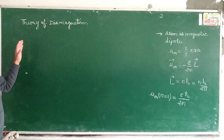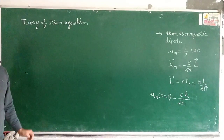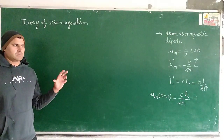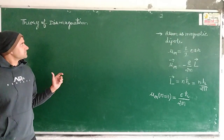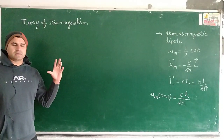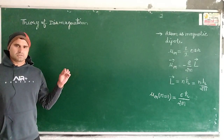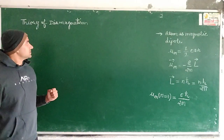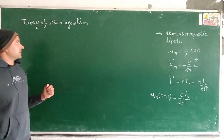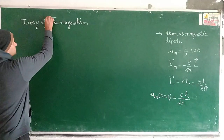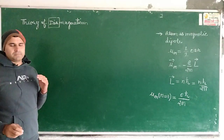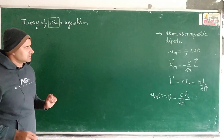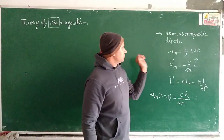Hello class, today we will discuss the theory of diamagnetism. When a material is placed in an external magnetic field, its behavior changes. Some materials get attracted feebly towards the external magnetic field, and some get repelled in the opposite direction. We will discuss diamagnetic materials, which get repelled by the external magnetic field, and the force of repulsion is weak.